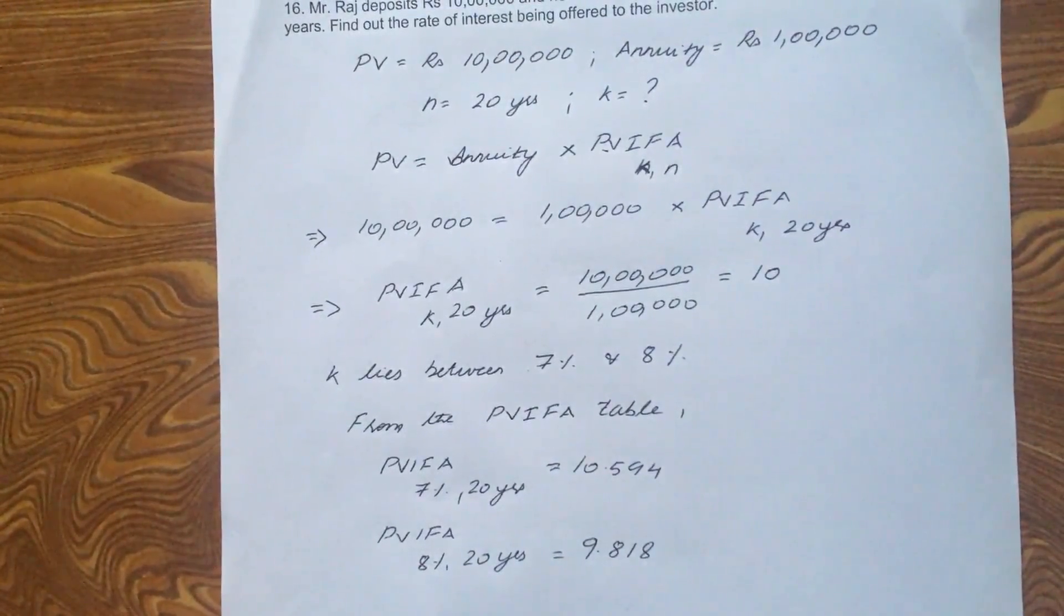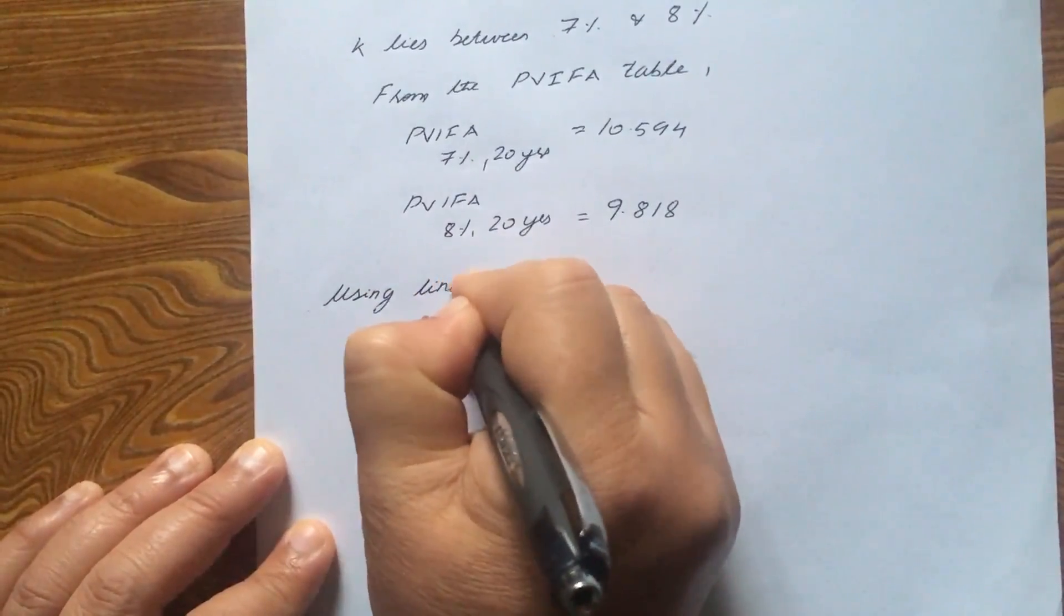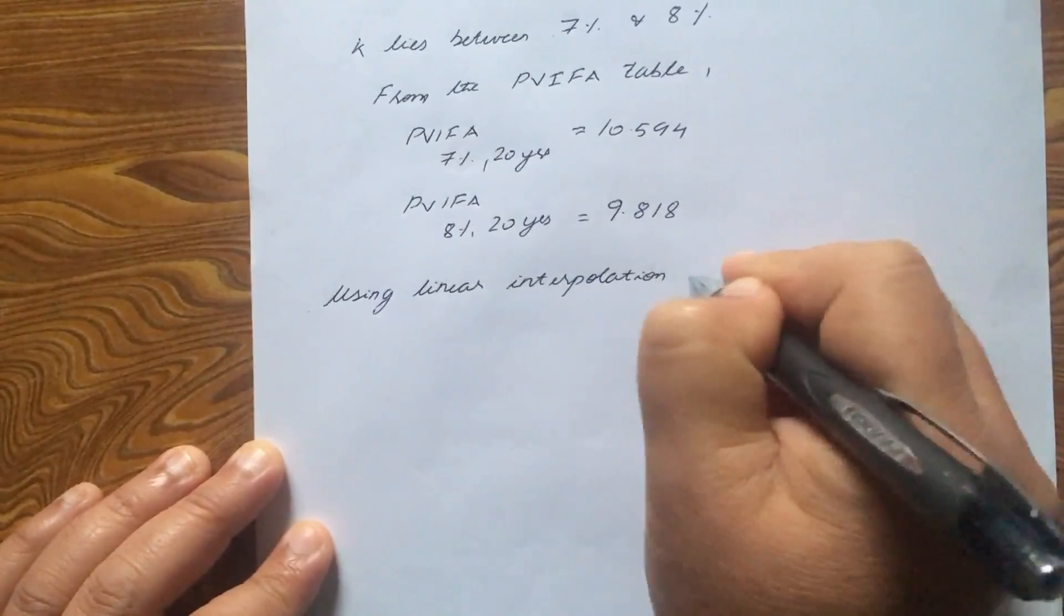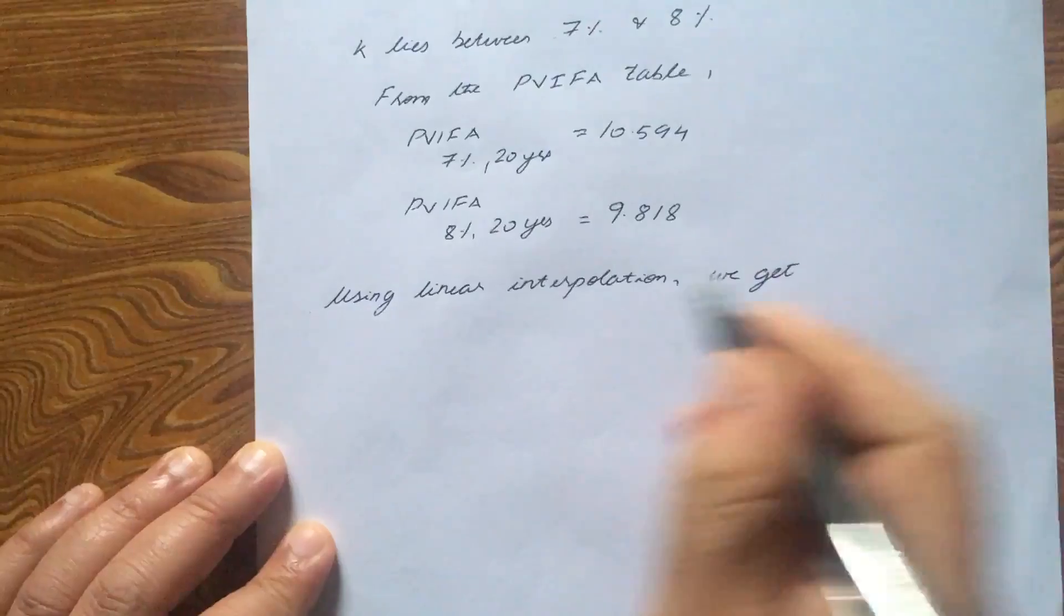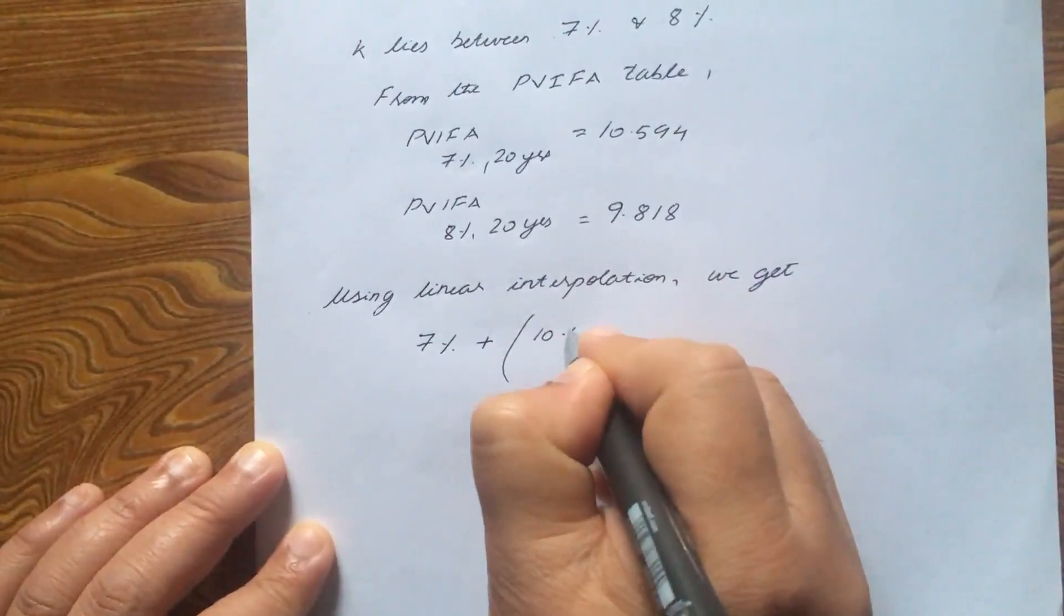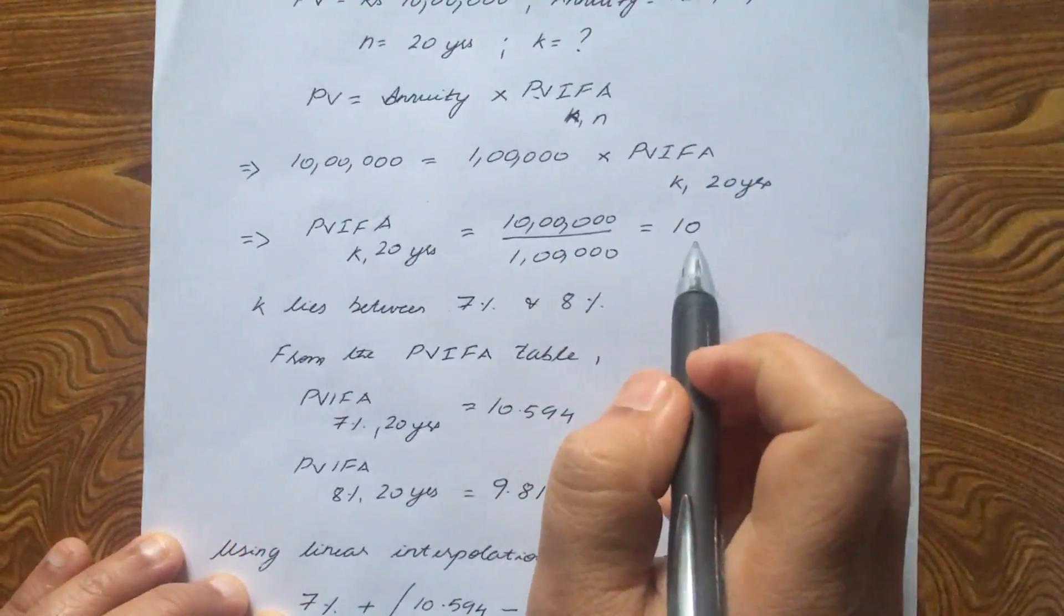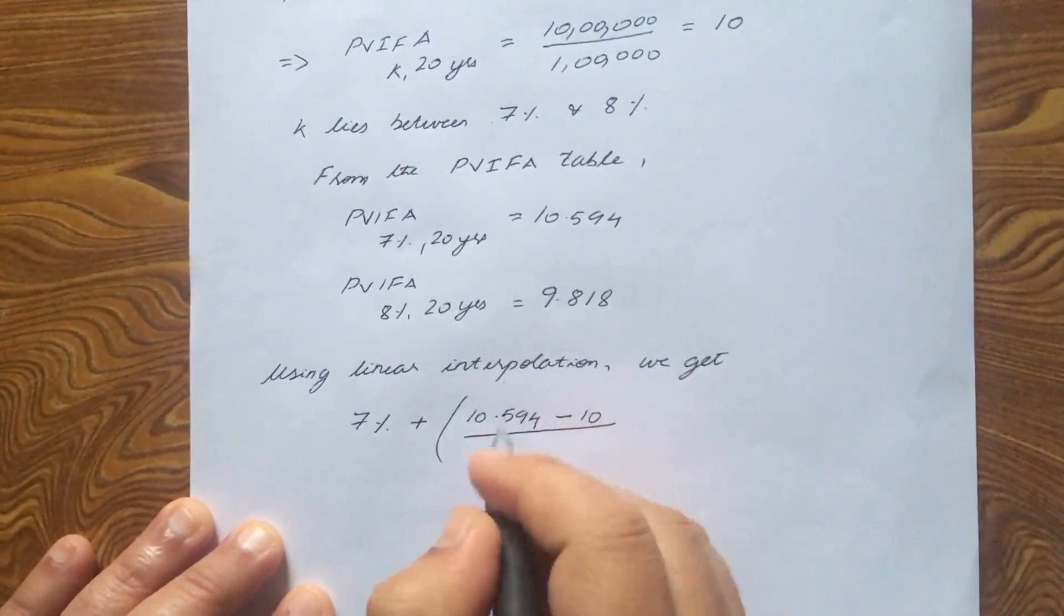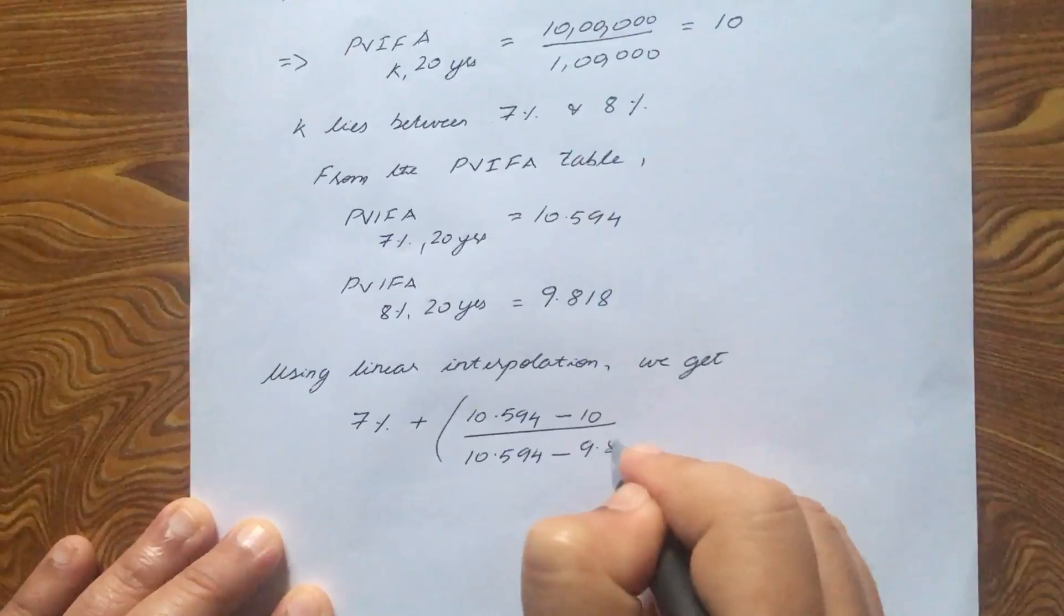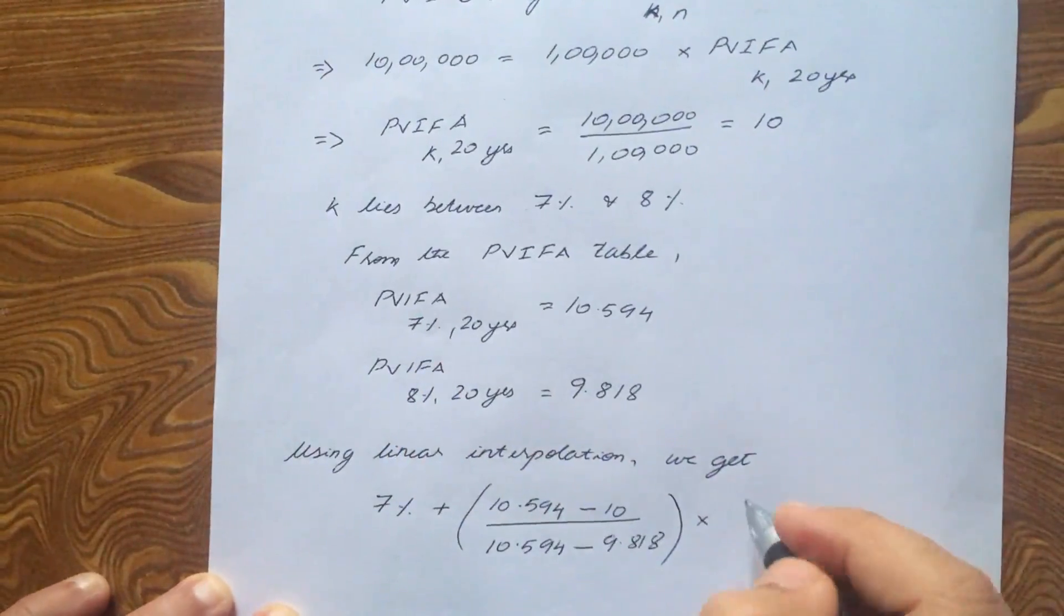Now, using linear interpolation, we get 7% plus 10.594, this value here, minus 10, this one that we found out, divided by 10.594 minus 9.818 into the difference between these two rates, 7% and 8%. What is the difference between these two? It is 1%.